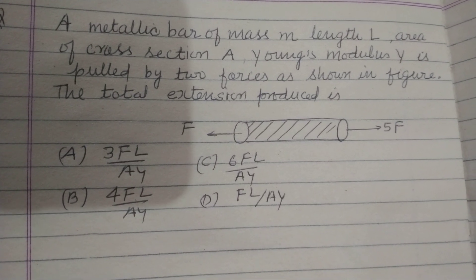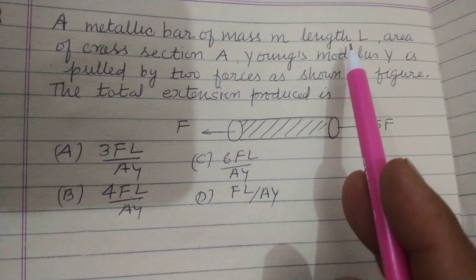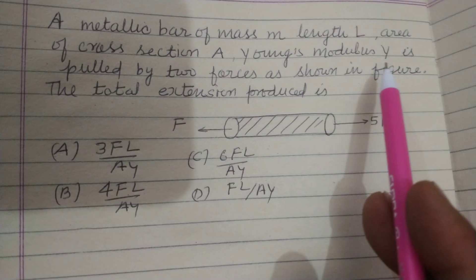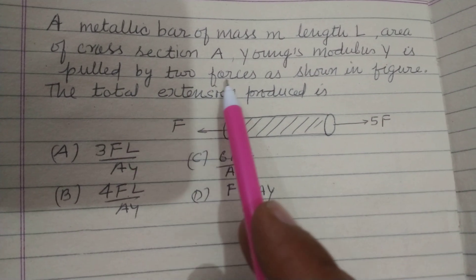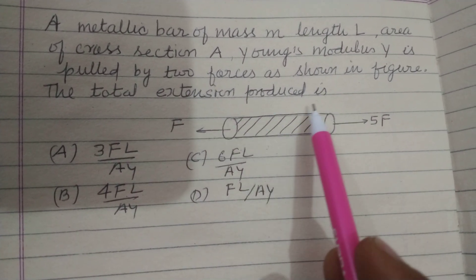Hello students, welcome to this YouTube channel. A metallic bar of mass m, length L, area of cross section A, and Young's modulus Y is pulled by two forces as shown in figure. The total extension produced is.